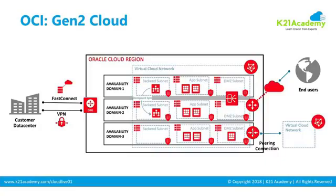In the UK, closer to London Heathrow — that's where I live, very close to the Oracle data center, about 10 minutes drive — that's another region. Within a region you have three Availability Domains, and an Availability Domain is nothing but a fault-tolerant data center that provides high availability and fault resilience.